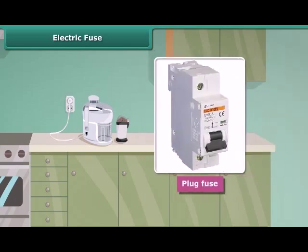A plug fuse is used in our houses. The plug fuse consists of two parts: the porcelain casing and the porcelain grip. This fuse has a thin wire of tin and lead alloy, which has a low melting point. A cartridge fuse is generally used in electrical appliances.